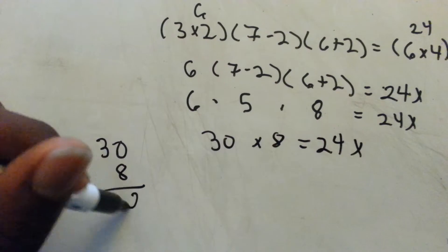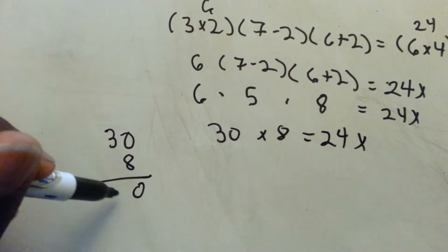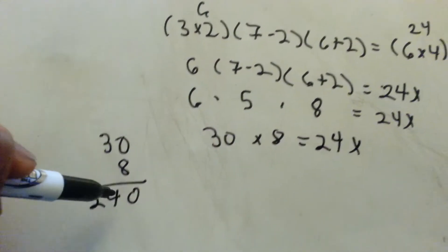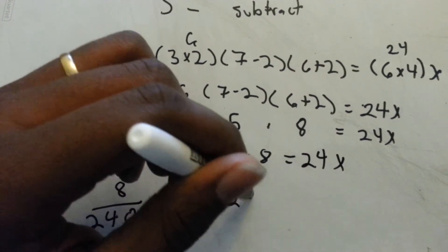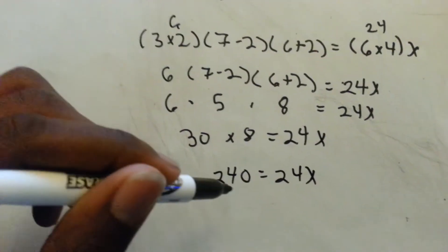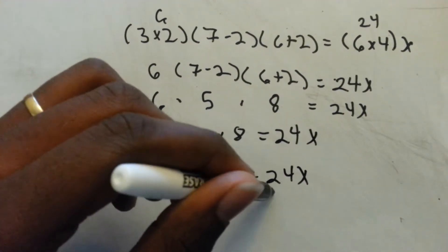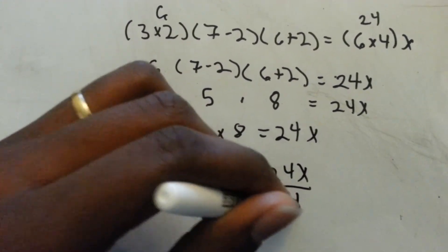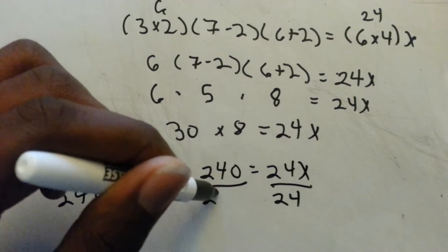Eight times zero is zero, eight times three is 24. So we have 240 equals 24x, and then we have to solve for x. So we divide both sides by 24, divide by 24.